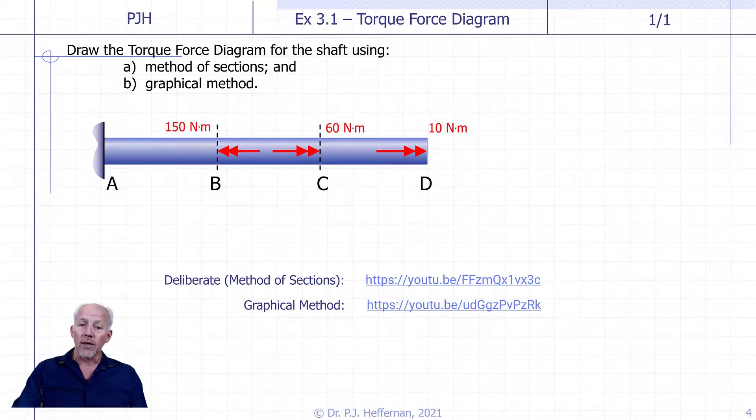Let's get started with a little bit of practice. We have done up this problem. What we want to do is to use the method of sections and to draw the torque force diagram. Like the axial force diagram, the torque force diagram is simply a graph that shows what the internal torque is across the length of the rod. We've done it using a deliberate method of sections, as well as the graphical method for you to practice with.